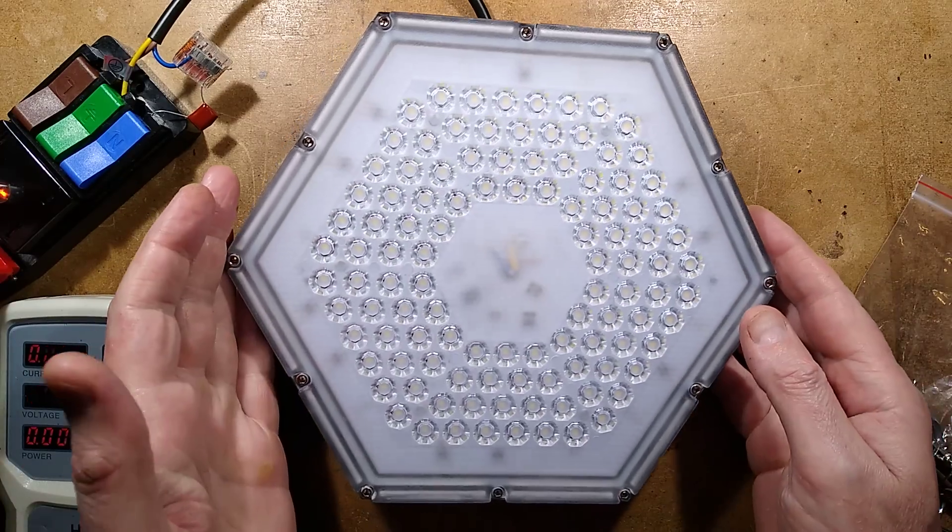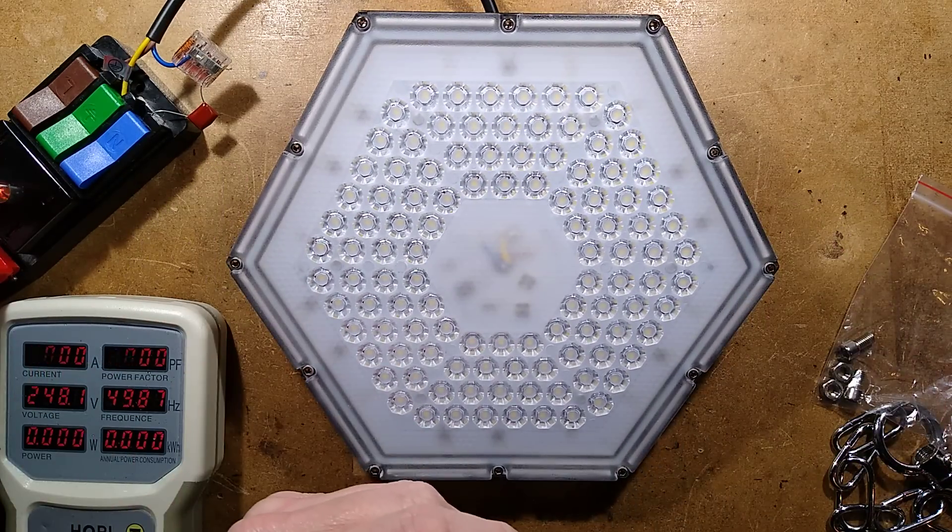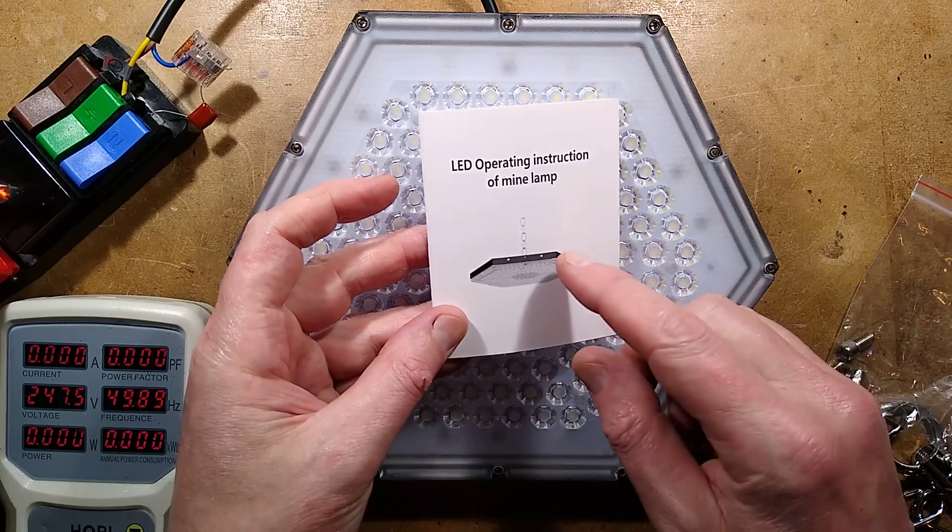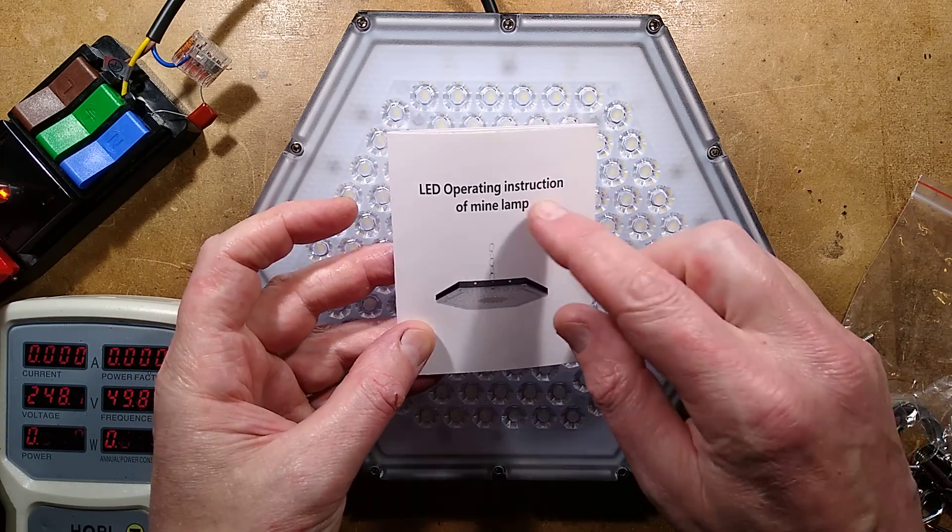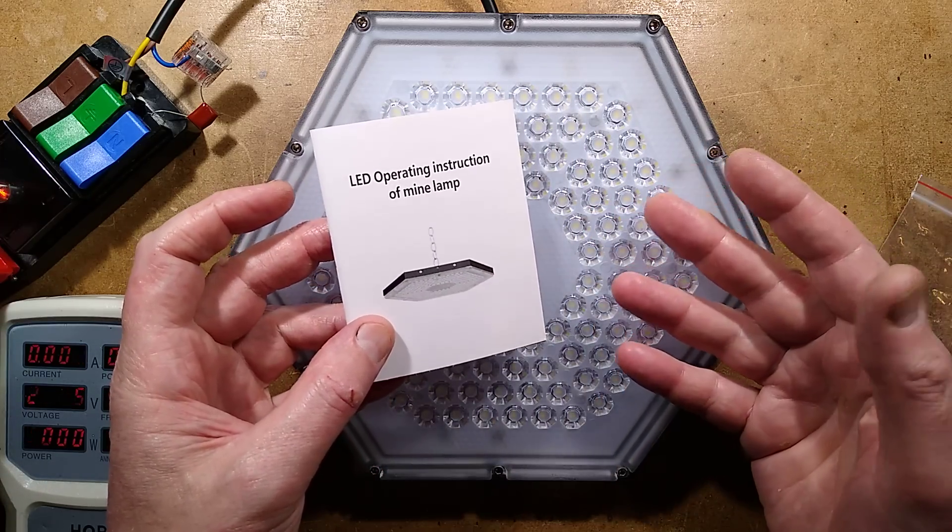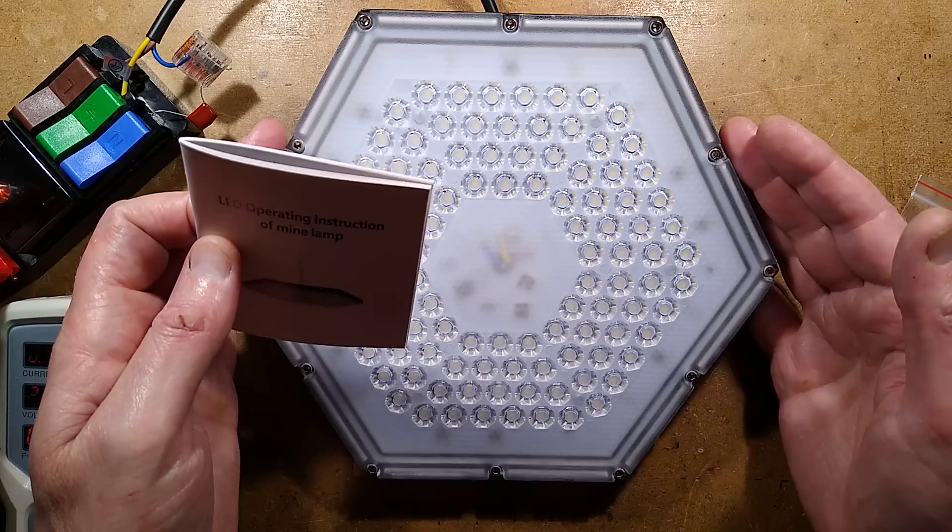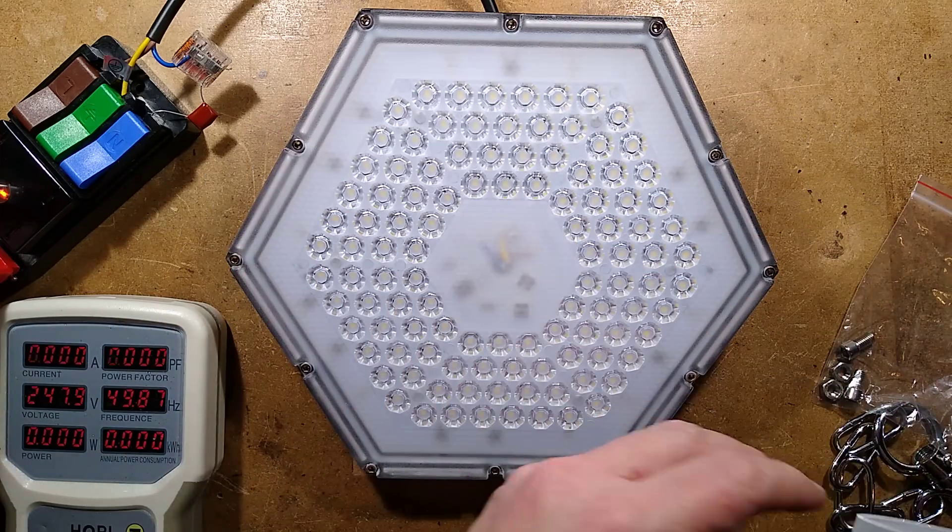A rather odd light from eBay called a mine light or mine lamp. It's basically a high bay LED light that comes with the option to mount it on a pole, mount them together, or hang them from a chain. I got this one that hangs from a chain.